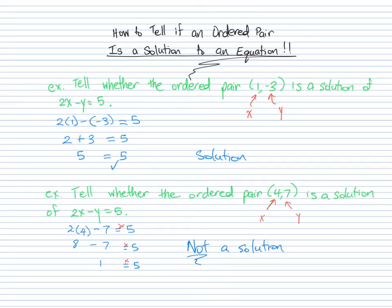So one more thing I do want to mention - there are infinitely many solutions for this equation. Even though 4 comma 7 is not a solution, we could figure out a solution that has an x value of 4. We could just plug in 4 and then figure out what y would be, and that would be a solution. So there are infinitely many solutions.